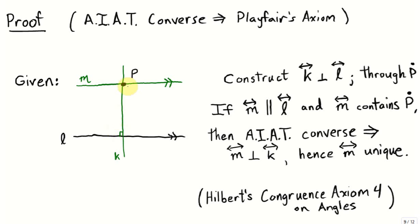Since these two angles are equal, that means M must be the perpendicular to K through P. There's only one line perpendicular to line K through the point P. Therefore, this parallel line is unique — there's only one parallel through this point. Why this is unique wasn't really stated in Euclid's original list of axioms, but later on, when the mathematician David Hilbert introduced a new set of axioms to give a rigorous foundation for Euclidean geometry, one of his axioms, congruence axiom number four, guarantees the uniqueness of this line.